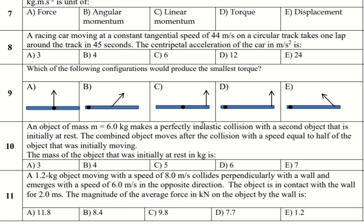الاثنين يلتحموا لماذا؟ لأنه perfectly inelastic collision moves after the collision with a speed equal to half of the object that was initially moving. إذن إذا كان هذا سرعته V فسرعة المجموعة ستكون نص هذا السرعة. والمطلوب the mass of the object that was initially at rest، إذن المطلوب كتلة هذا الجسم الثاني اللي كان متوقف في البداية.